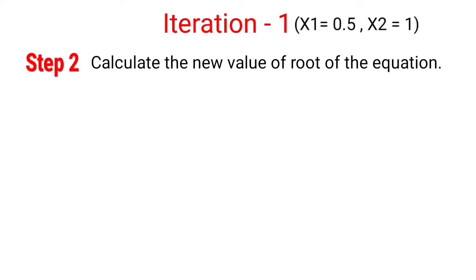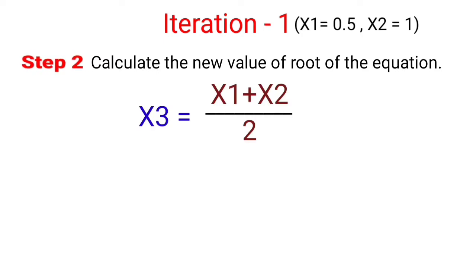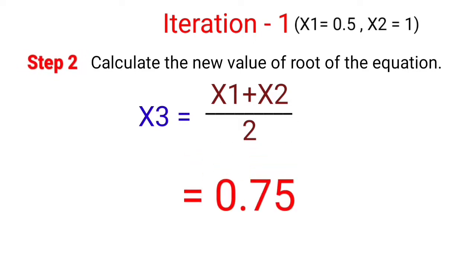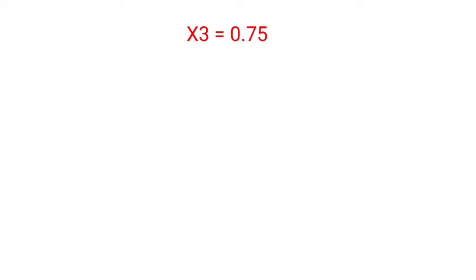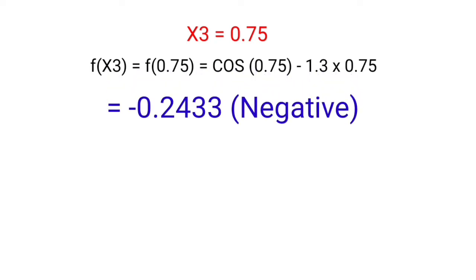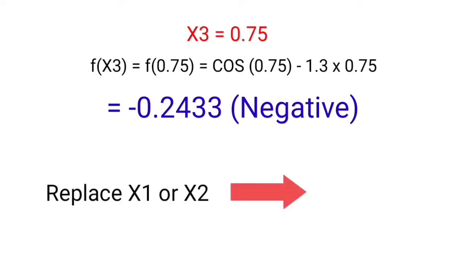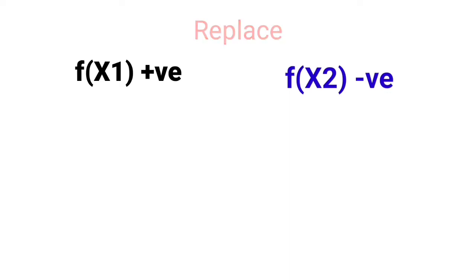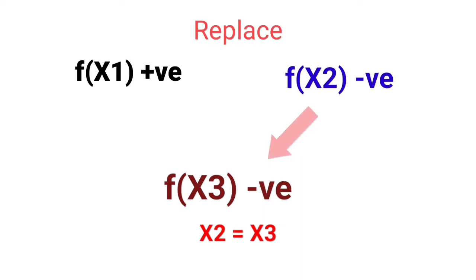For the first iteration, with x1 equal to 0.5 and x2 equal to 1, we calculate the new root x3 equal to (x1 plus x2) divided by 2 using the bisection formula, giving 0.75. Then f(0.75) equals minus 0.2433, which is negative. Since f(x2) and f(x3) have the same sign, we replace x2 by x3.